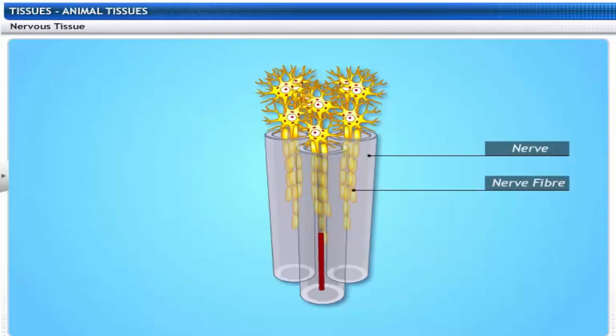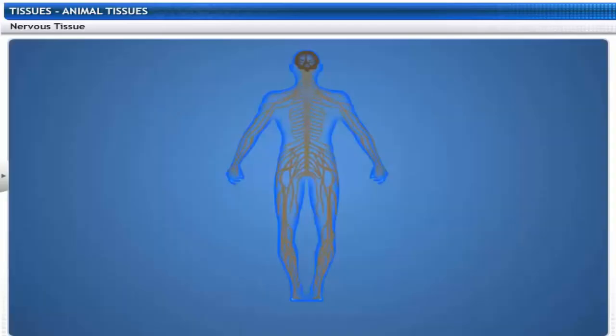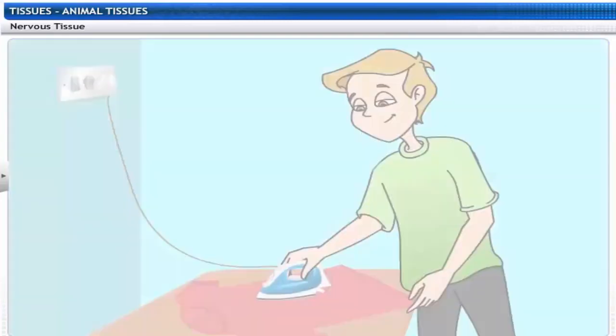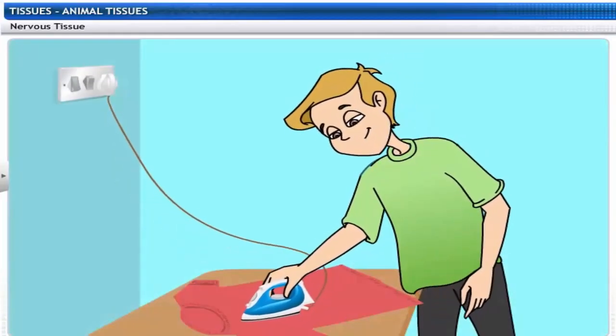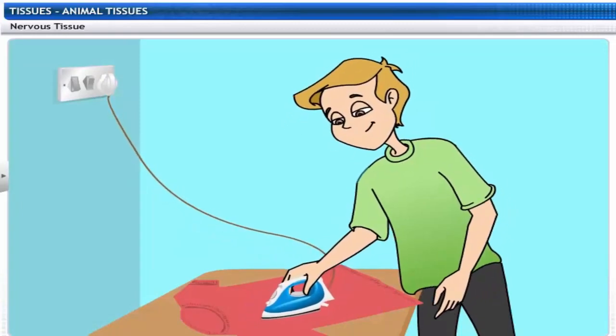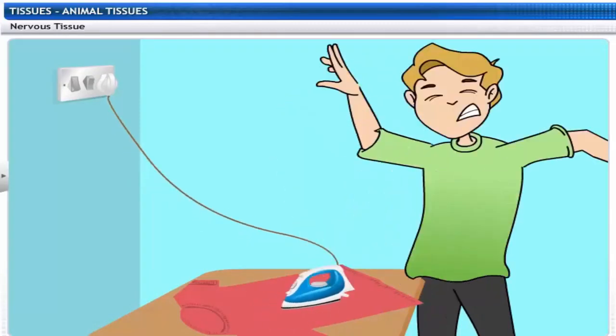These nerves are richly supplied with blood. Nervous tissues are found in the brain, spinal cord, and nerves. The combination of nerve and muscle tissue enables man to move rapidly in response to stimuli.